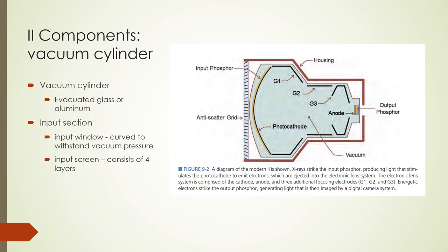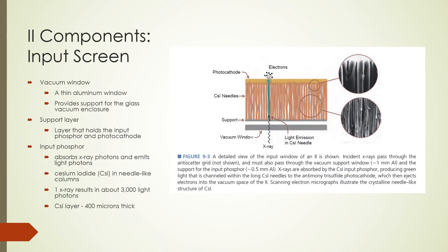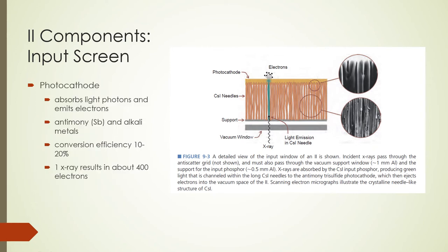The first layer in an image intensifier is a vacuum window — a thin aluminum window that protects the glass vacuum enclosure. The second layer is a support layer consisting of the input phosphor and photocathode. The input phosphor, the third layer, converts x-ray photons into light photons and plays the role of the screen as in general radiographic imaging. It is typically made of cesium iodide crystals grown in needle-like columns, about 400 microns thick. Because of its sensitivity to x-rays, one x-ray photon results in about 3,000 light photons being produced. The photocathode, the fourth layer, converts light photons from the cesium iodide into electrons by means of the photoelectric effect. It is made of antimony and alkali metals with a conversion efficiency of 10 to 20 percent, releasing about 400 electrons per absorbed x-ray photon.